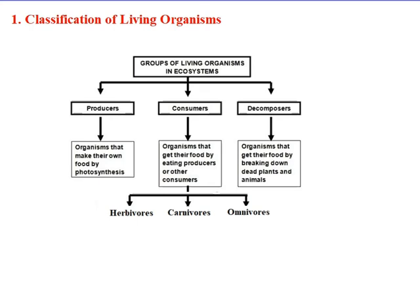As we can see, living organisms in ecosystems can be classified into three types: producers, consumers, and decomposers.